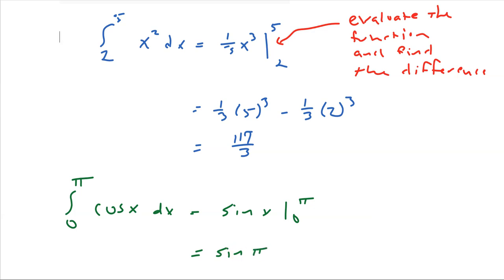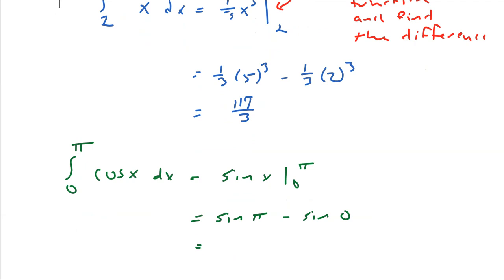And we'll evaluate that at 0 and pi. We'll find the difference. So that's sine of pi minus sine of 0. So remember your unit circle stuff here. Pi would be this point over here. And then sine is the y-coordinate, so that would be 0. And sine of 0 is 0, so 0 minus 0 is 0 on most days.